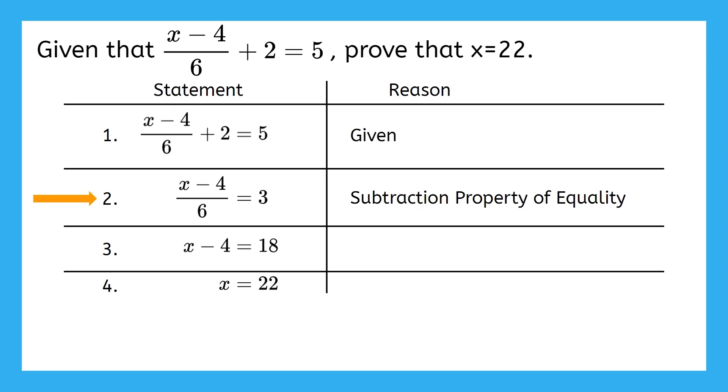The next statement is x minus 4 equals 18. Well, how do we get here from the step above? We multiplied both sides of the equation by 6. So which property of equality tells us we're allowed to multiply something to both sides of an equation? The multiplicative property of equality.